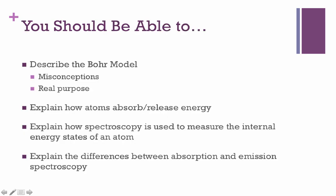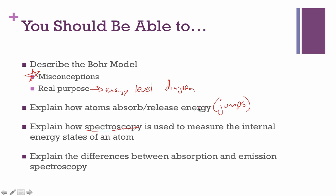So that's pretty much it. At this stage you should be able to describe the misconceptions of the Bohr model and its real purpose as an energy level diagram showing how electrons jump up and down between levels — not a picture of what the atom looks like. You should be able to explain how atoms absorb or release energy through jumps between energy levels, and how spectroscopy tracks these jumps to reveal the internal structure of the atom. Last but not least, you should be able to interpret the difference between absorption and emission spectra. You'll be practicing this in class by recording your own emission spectra, which should give you a much better understanding of how the whole process works.